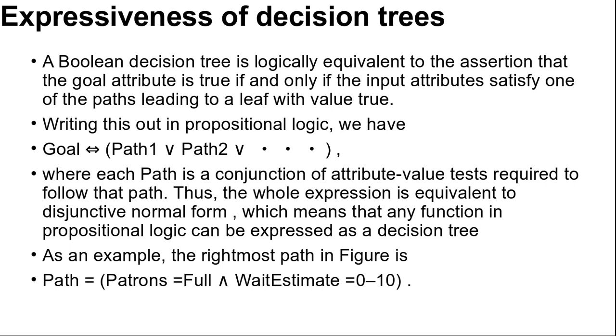The path is a conjunction of attribute value tests required to follow that path. Thus the whole expression is equivalent to disjunctive normal form, which means that any function in propositional logic can be expressed as a decision tree.